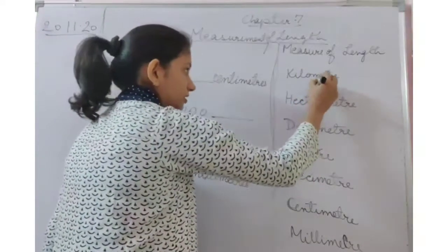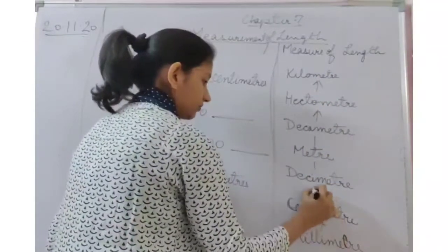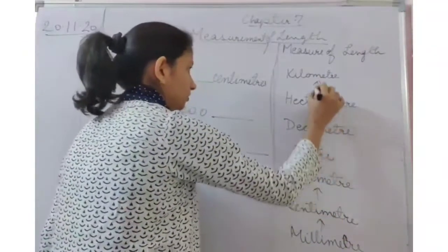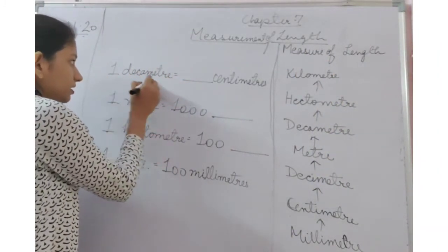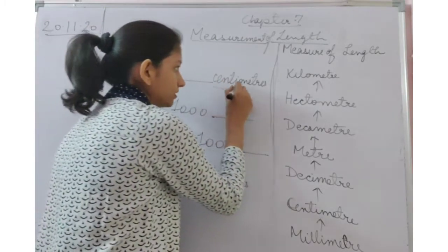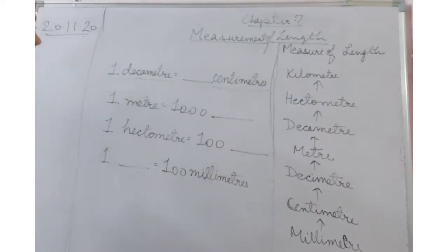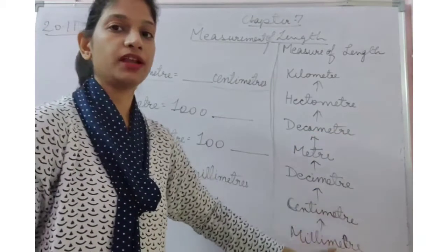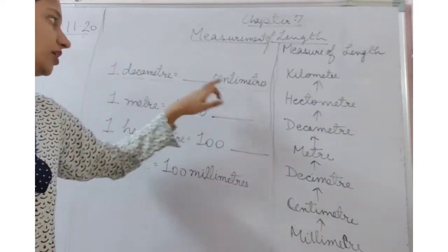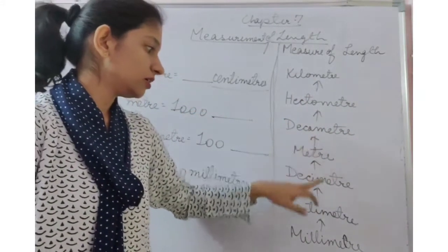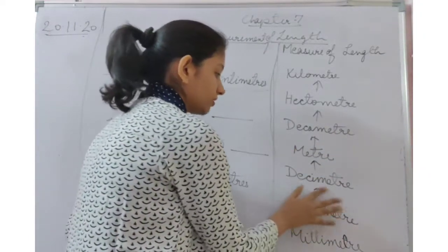This is the biggest unit and this is the smallest unit — from small to big, ending at kilometer. Now let's look at conversion. For example, decimeter to centimeter. You have to convert from decimeter to centimeter. What you have to see is whether you are going up the ladder or going down the ladder. Decimeter to centimeter means we are going down the ladder.